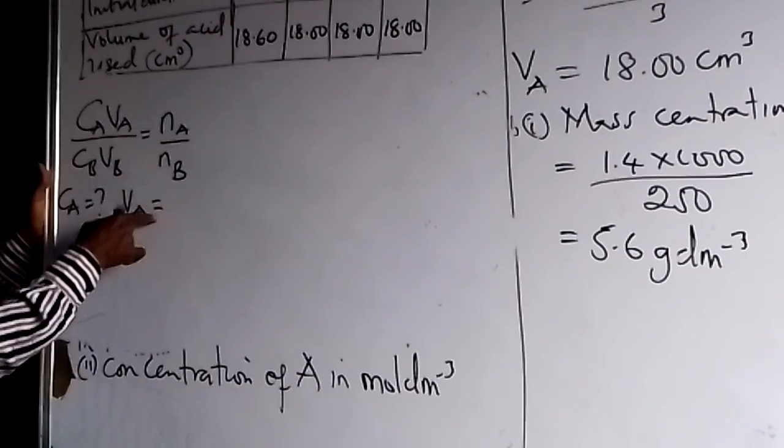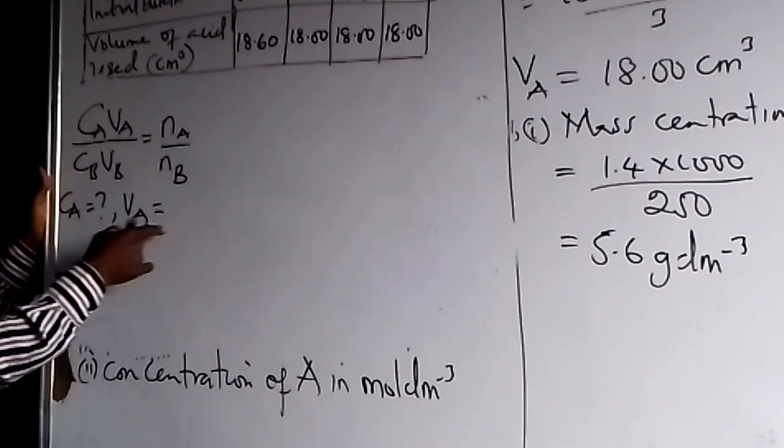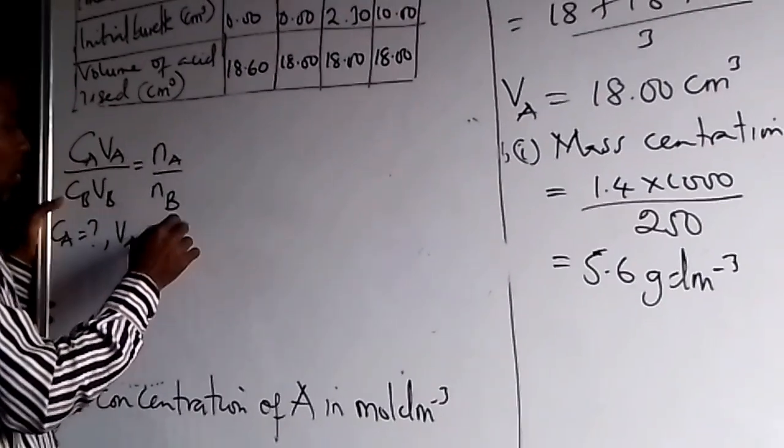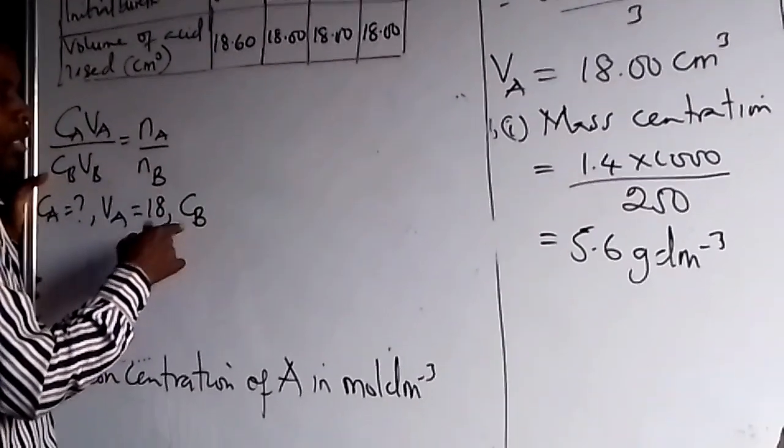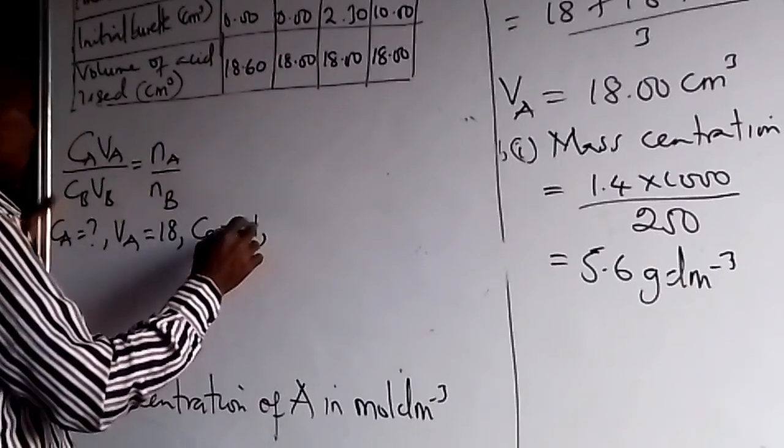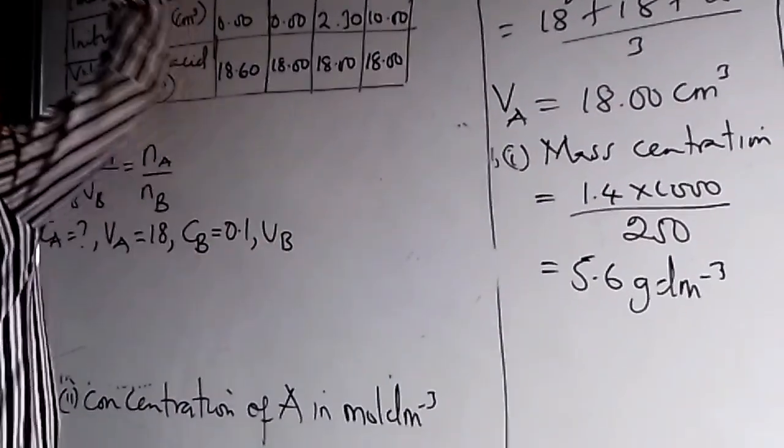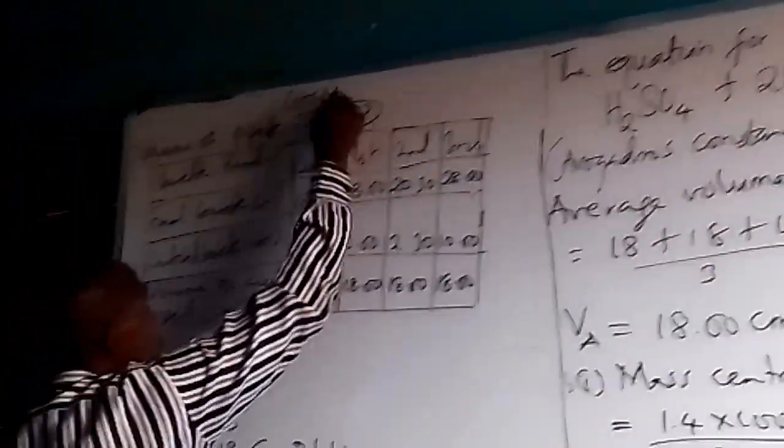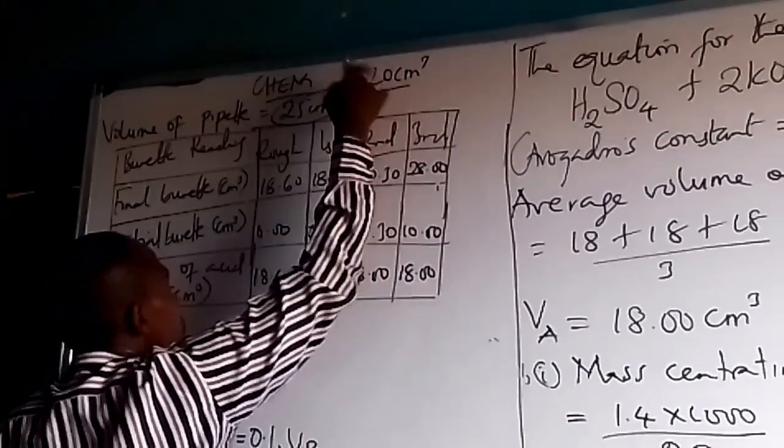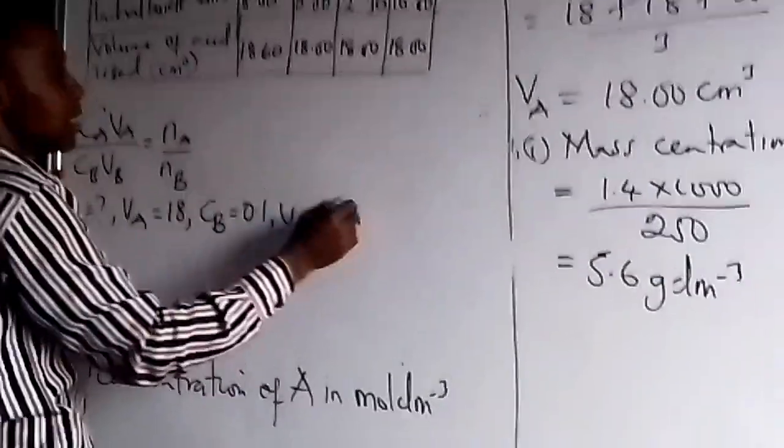So now what we are looking for is concentration of acid in moles per dm³. CA is not known. The volume of acid is the average volume of acid used, which we solved and got 18, so it's 18.00. Concentration of base is 0.1. Volume of base is the volume of the pipette. Here is 25 cm³. So we are using this one, 25 as given.